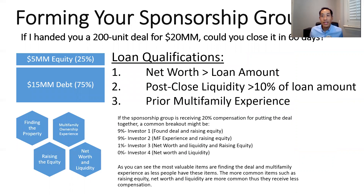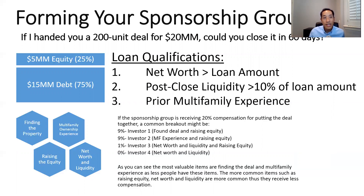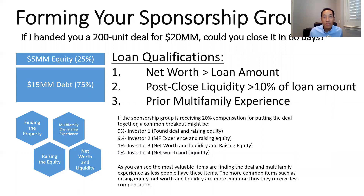Let's go through an example. A 200-unit deal at $20 million — let's say you get a $15 million loan and need to raise $5 million in equity. Most general partners aren't going to have a $15 million net worth, and after putting $5 million down, they're also not going to have $1.5 million in post-close liquidity. So they're going to form a sponsorship group — maybe five or six people — so the group can qualify for the loan.